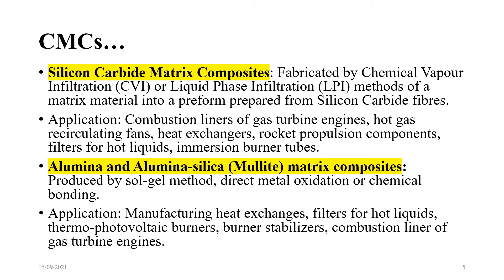Silicon carbide matrix composites are typically fabricated by CVI (chemical vapor infiltration) or liquid phase infiltration (LPI) methods — the detailing of which will come in a later video lecture — infiltrating a matrix material into a preform prepared from silicon carbide fibers. Applications include combustion liners of gas turbine engines, hot gas recirculating fans, heat exchangers, rocket propulsion components, and immersion burner tubes.